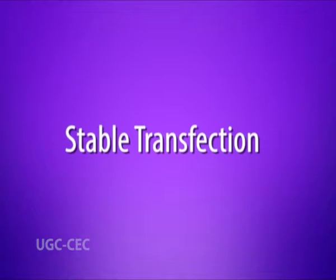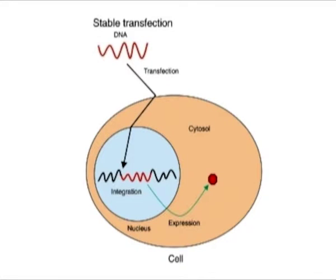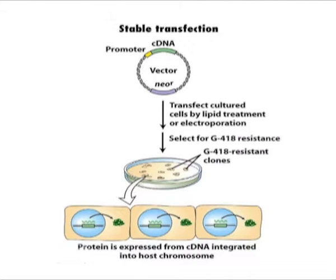The second type is stable transfection, also called permanent transfection. In stable transfection, the transferred DNA is integrated into the chromosomal DNA and the genetics of the recipient cells are permanently changed. To detect it, a marker gene is co-transfected, which gives the cell some selectable advantage, such as resistance towards a certain toxin or antibiotic.